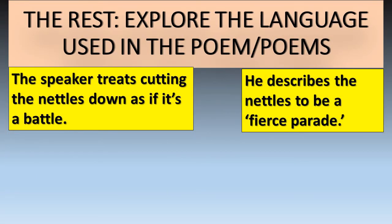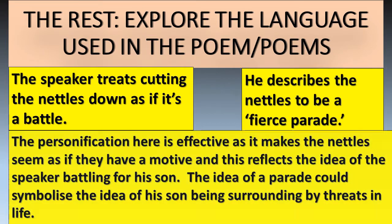Once we've explored the themes and structure, it's time to explore the language, and you can use all the remaining time for that. You don't necessarily need a conclusion — just get into exploring the methods used by the writer. The speaker treats cutting the nettles down as if it's a battle; he describes the nettles as a 'fierce parade.' The personification here is effective as it makes the nettles seem as if they have a motive, reflecting the idea of the speaker battling for his son — he's in a constant war to keep his child safe. The idea of a parade could symbolise his son being surrounded by threats in life, not just in the garden.